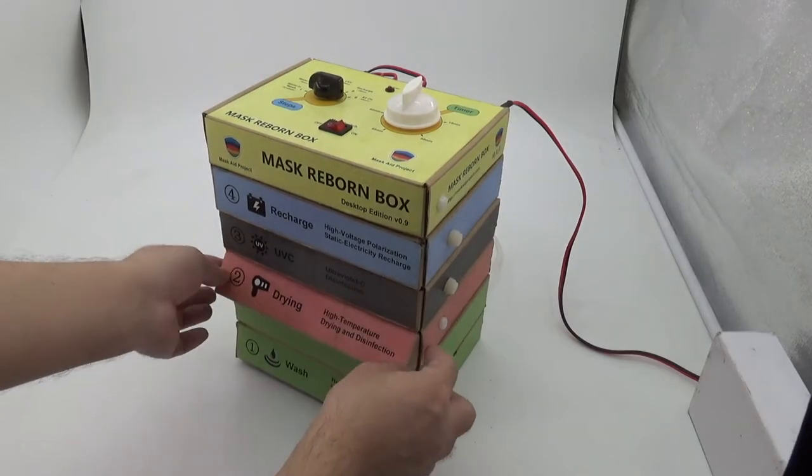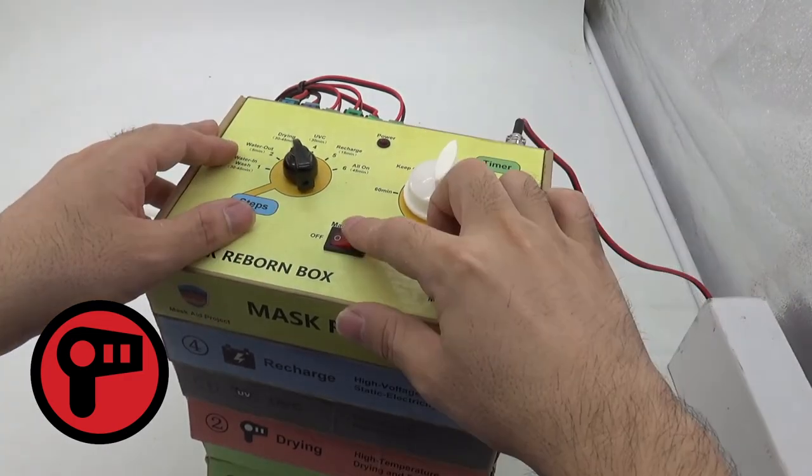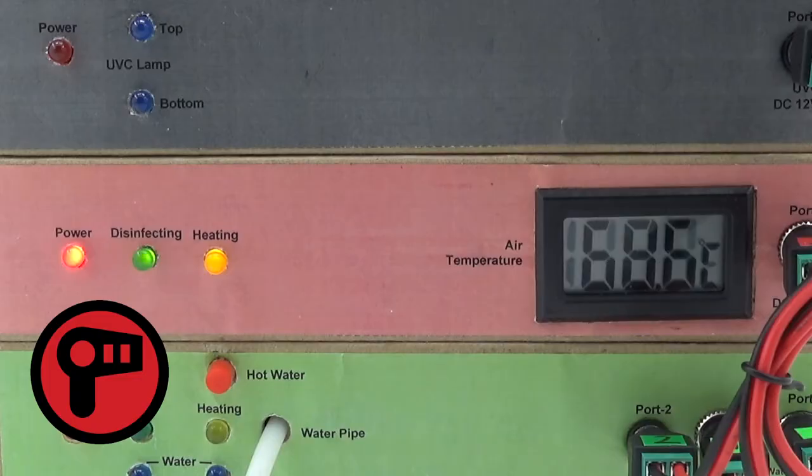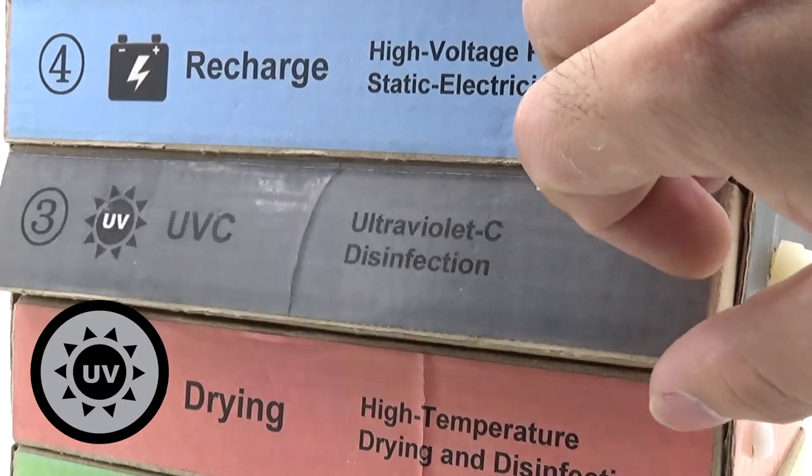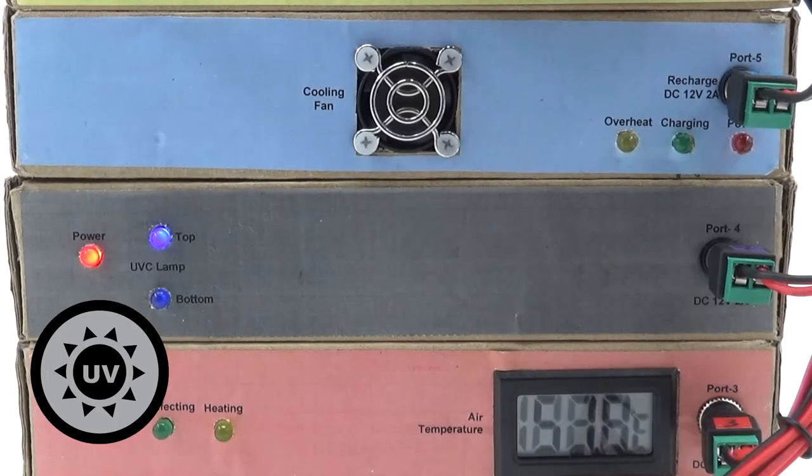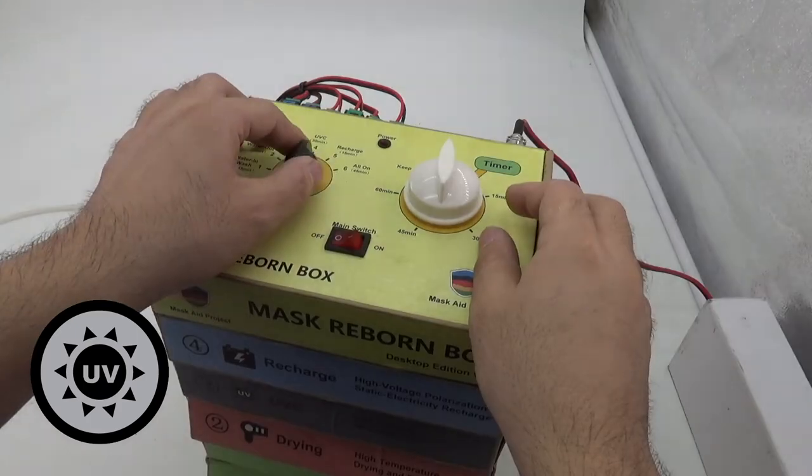Next, we dry it with hot air at 60 degrees for 30 minutes to sanitize it. Meanwhile, we expose the mask to UVC light, which further sanitizes the mask, killing 99% of bacteria and viruses like COVID-19.